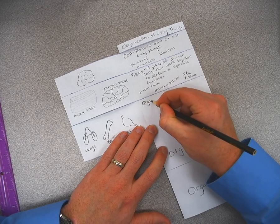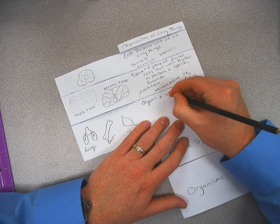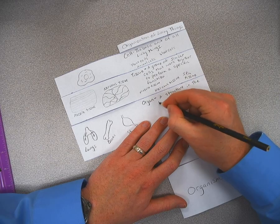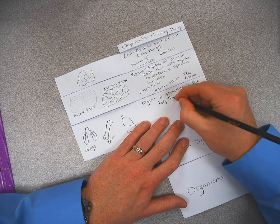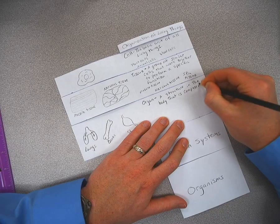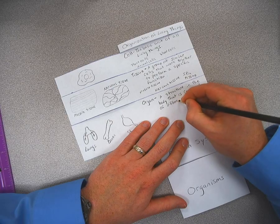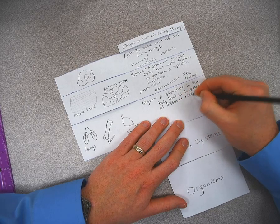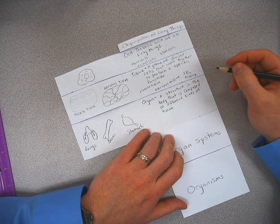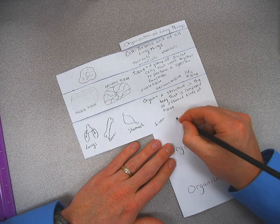Now, here for the organ, our definition for organ is a structure in the body that is composed or made of different kinds of tissue. Okay, and we have some of the examples there. You also have liver, you have kidneys, and there are other organs.